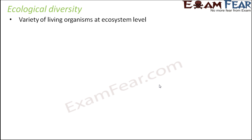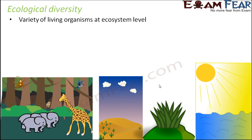Now let us look at ecological diversity — the variety of living organisms at the ecosystem level. There are many types of ecosystems on Earth: deserts, forests, mountains, slopes, oceans, grasslands, and more. Each ecosystem may have a different variety of living organisms. A place like India has a large variety of ecosystems — deserts, mountains, and oceans — compared to regions with fewer types of ecosystems.